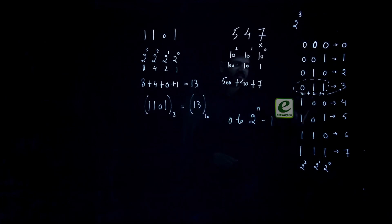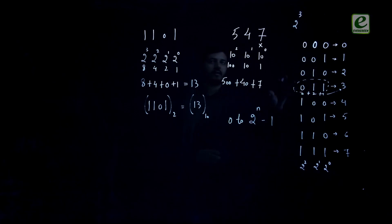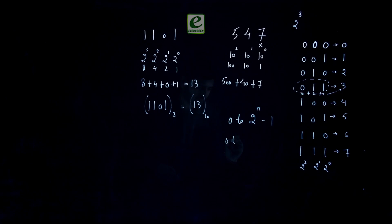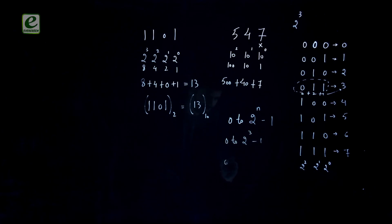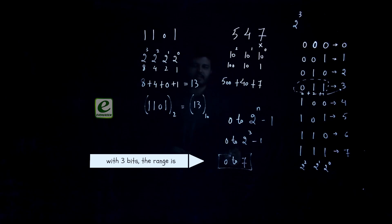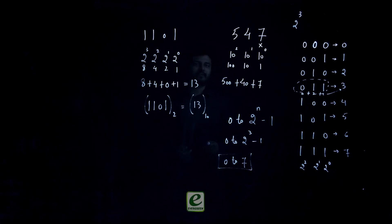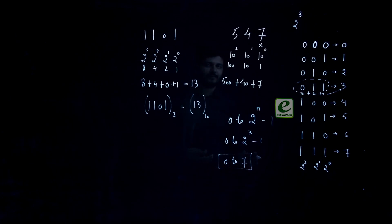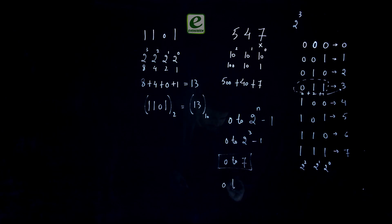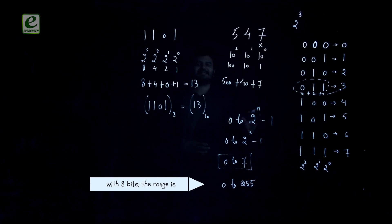With 3 bits the unsigned range is 0 to 2 raised to power 3 minus 1, which is 0 to 7. With 4 bits: 0 to 15. With 5 bits: 0 to 63. And with 8 bits (1 byte): 0 to 255. But this is all about unsigned range. Now let's talk about signed ranges.